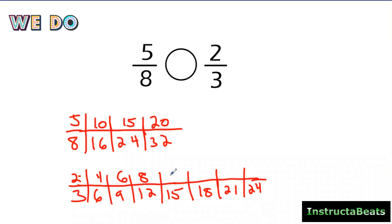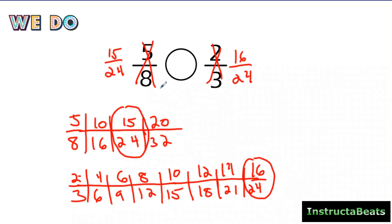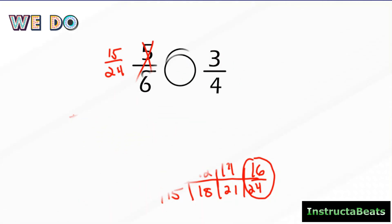Numerators: two, four, six, eight, ten, twelve, fourteen, sixteen. I see my common denominator is going to be twenty-four. Be careful that you picked the right equivalent fraction — five-eighths became fifteen twenty-fourths, and two-thirds became sixteen twenty-fourths. Now that my denominators are the same, what's bigger, fifteen or sixteen? Sixteen would be larger. So fifteen twenty-fourths is less than sixteen twenty-fourths. This one had a little bit more work, but the more you do this, the more you're going to recognize that first common denominator.